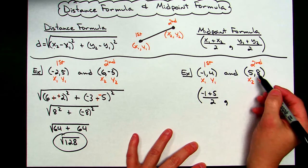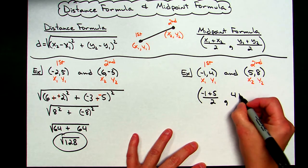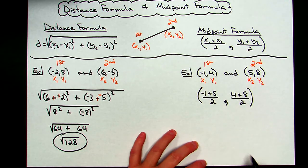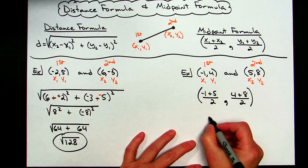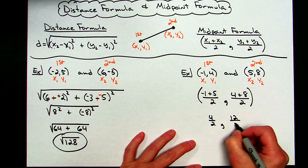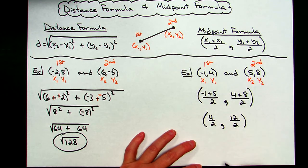Now I'm going to add up my y's, so 4 plus 8 divided by 2, that's going to give me my y coordinate. So this is going to be 4 over 2, and this is going to be 12 over 2, and I can keep simplifying down.